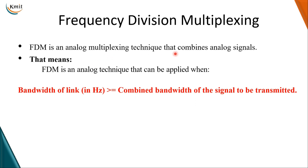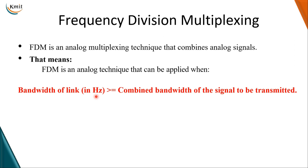Frequency division multiplexing is an analog technique which combines analog signals. We are dividing the bandwidth of the channel based on frequency, which is why it is called frequency division multiplexing. FDM can be applied when the combined bandwidth of the signals to be transmitted is less than or equal to the bandwidth of the link in total, which is measured in hertz.